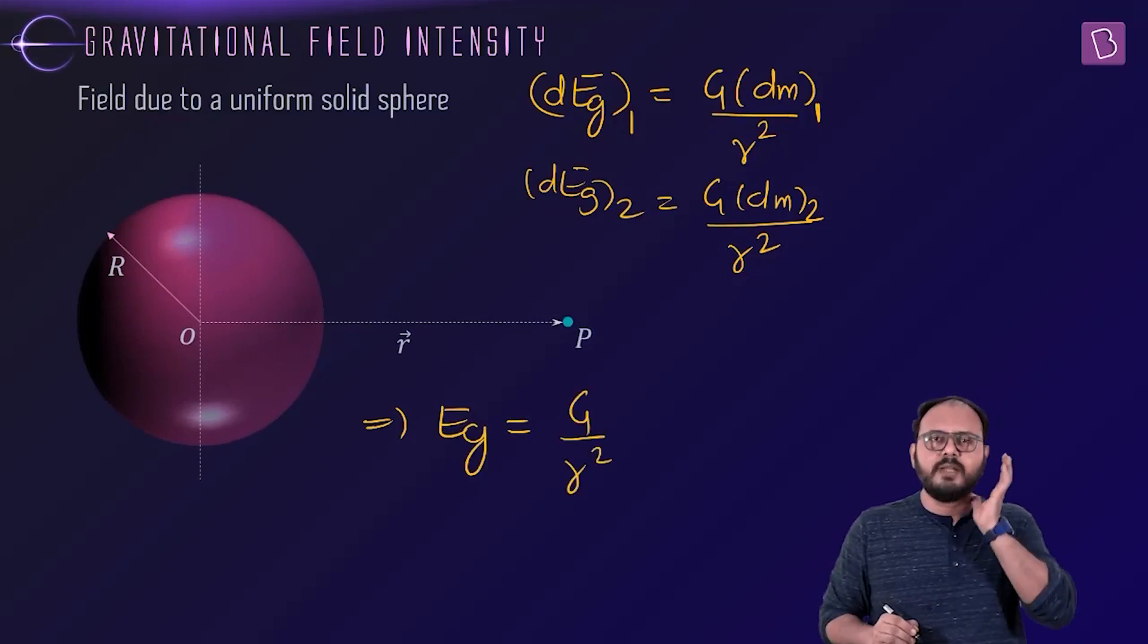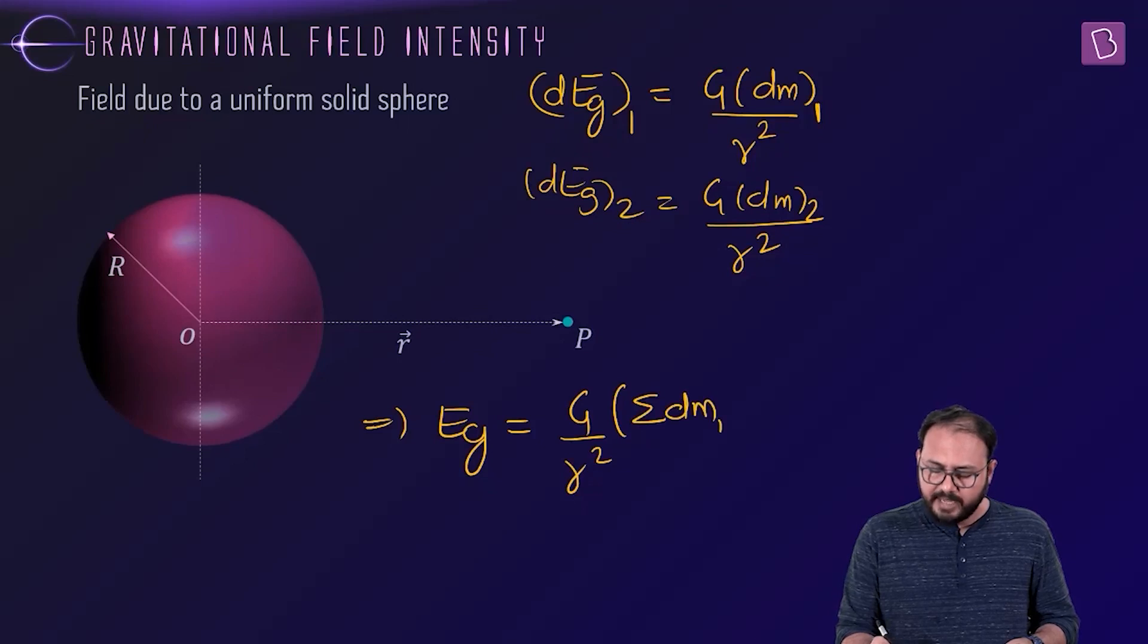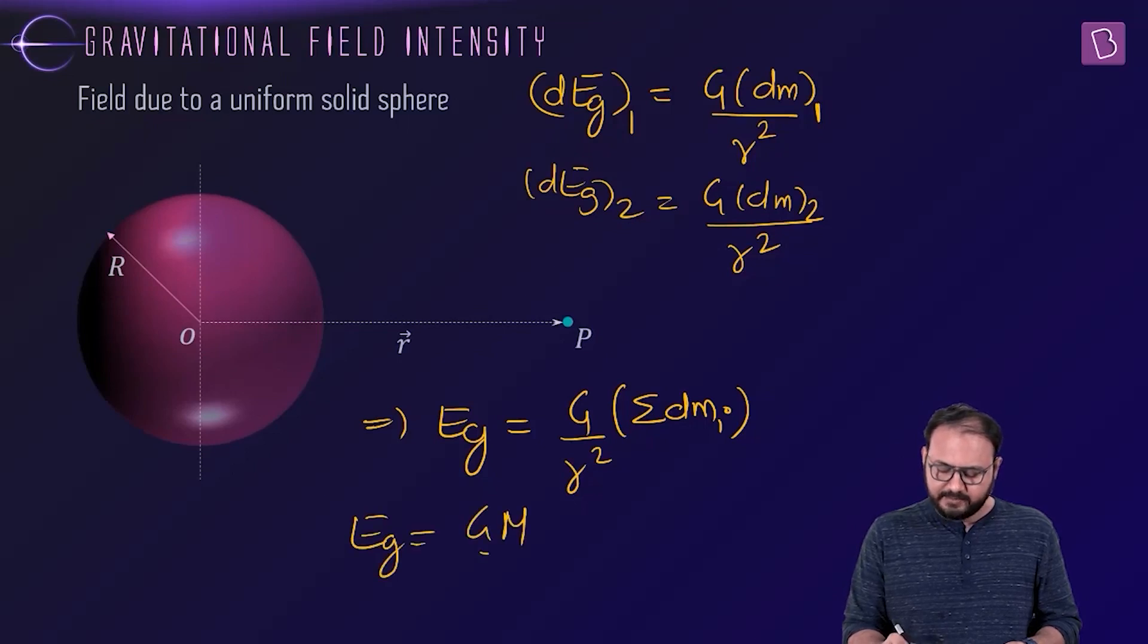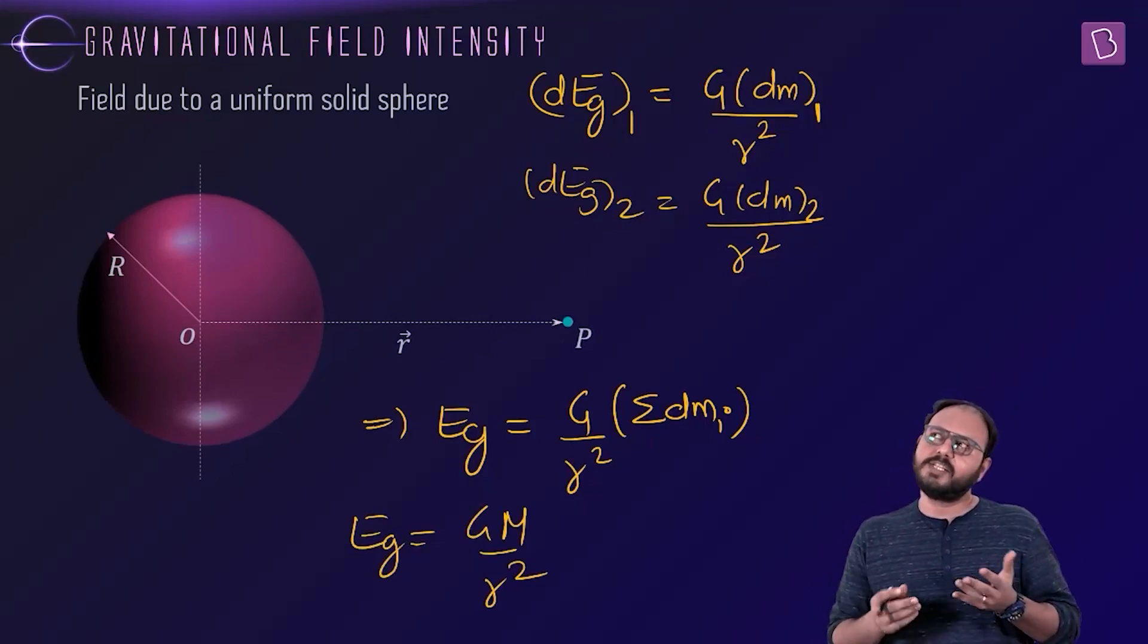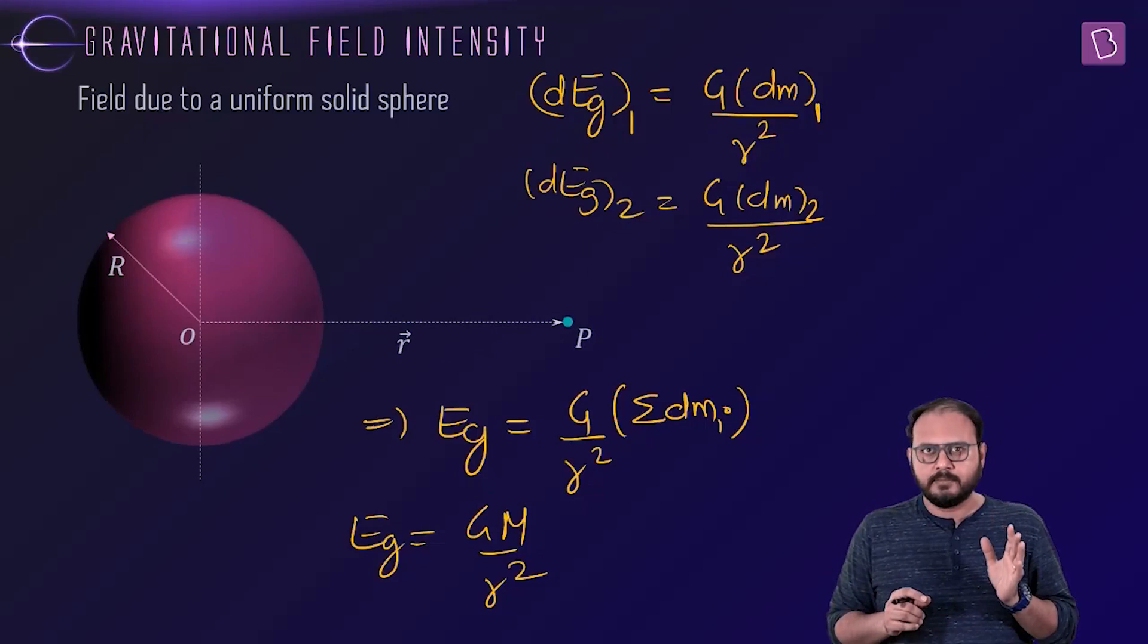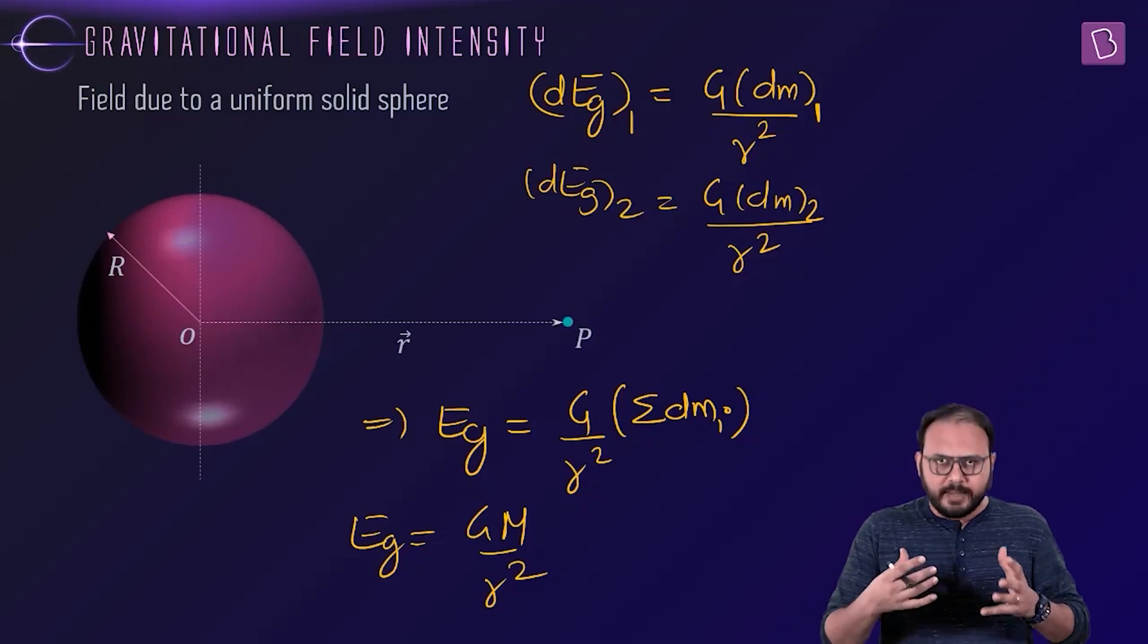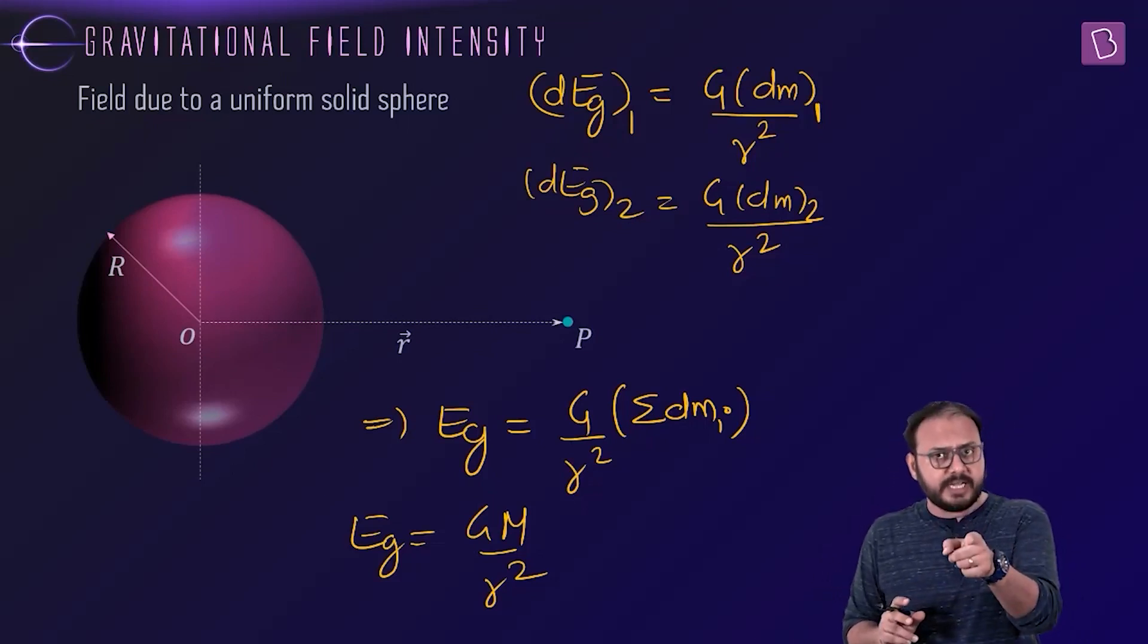You're saying g and r square will come out common because the numerator g and denominator r square are the same for everyone. Then you will have sigma dm, sum of all the dms, and we know sum of all dms is the total mass. So for an outside point the formula is still the same. For a uniform shell or a uniform solid sphere, the shell theorem outside part gives the same result. The answer is still GM by r square for outside point.